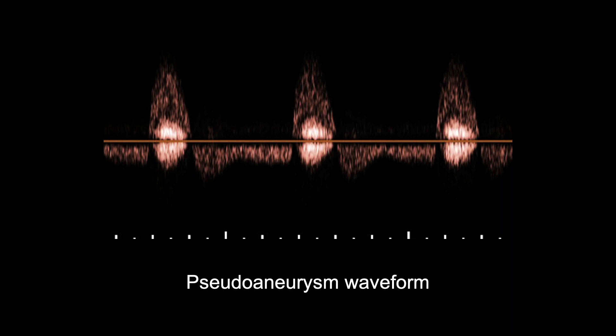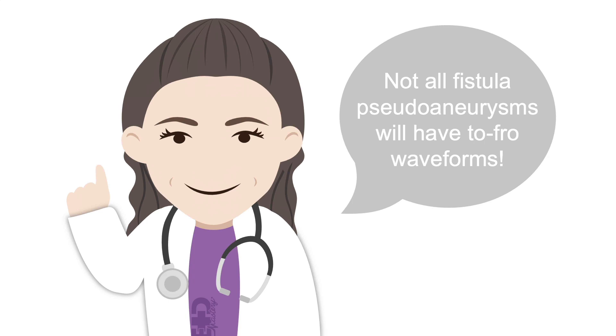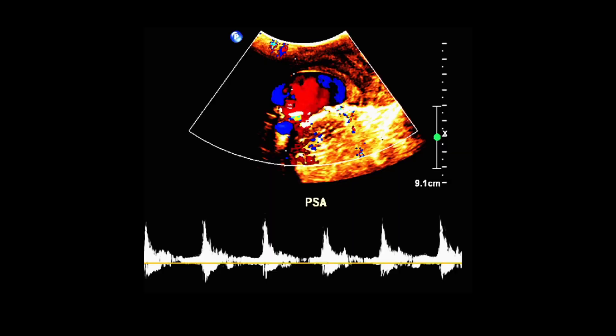On Doppler ultrasound, pseudoaneurysms often demonstrate a to-fro waveform, like in this image where the flow alternates above and below the baseline. Like the yin-yang sign, this is again due to the blood flow moving in opposite directions. These images show another example of a pseudoaneurysm to-fro waveform along with the yin-yang sign. However, note that not all fistula pseudoaneurysms will have to-fro waveforms, although it is characteristic. There may commonly be a less exaggerated to-fro waveform instead, like this example where there is more antegrade flow above the baseline.